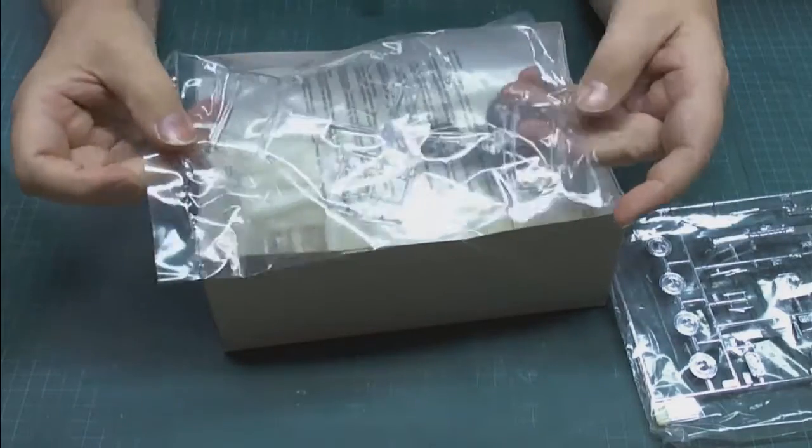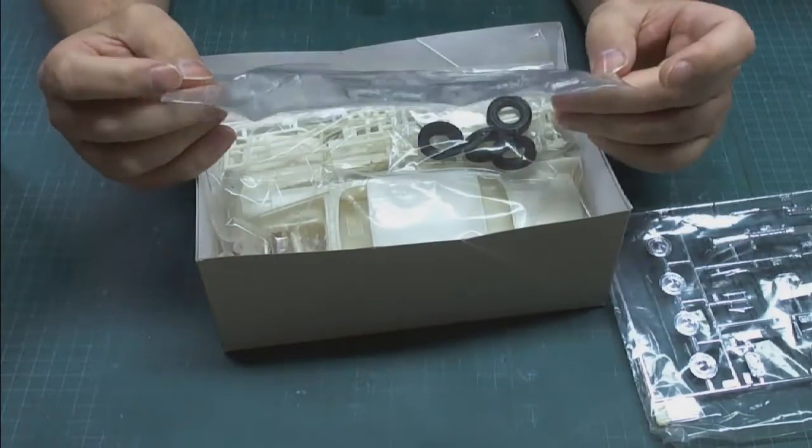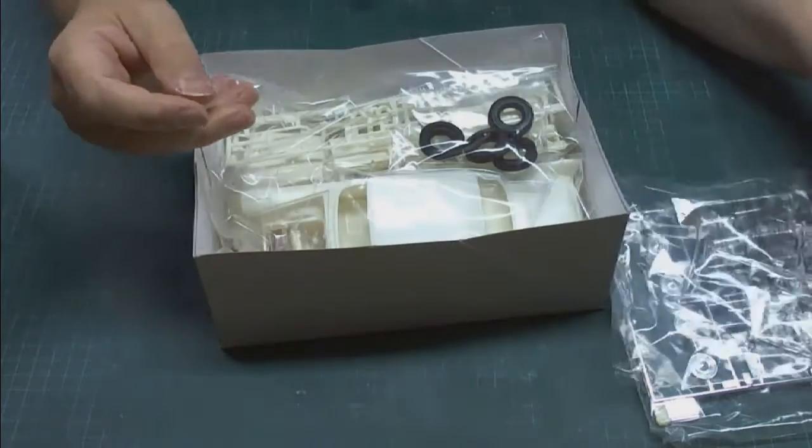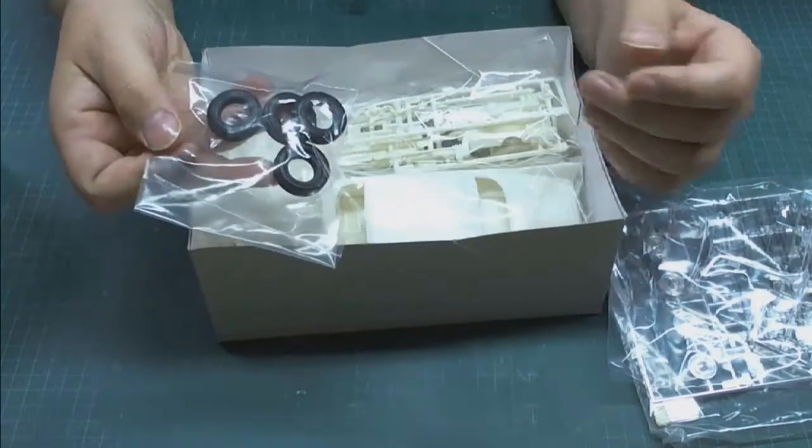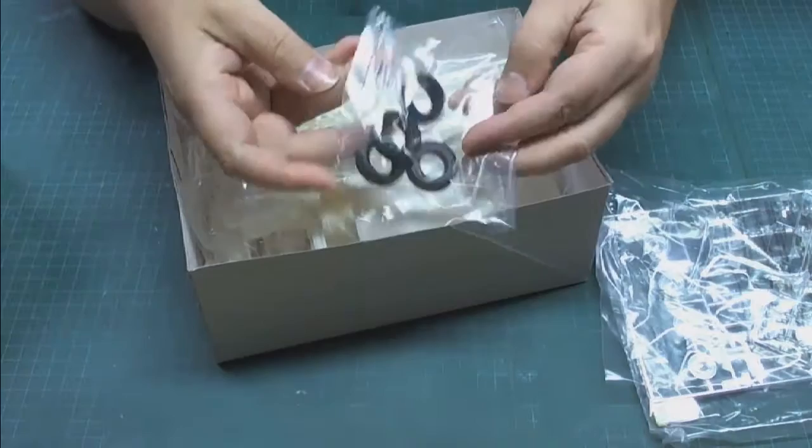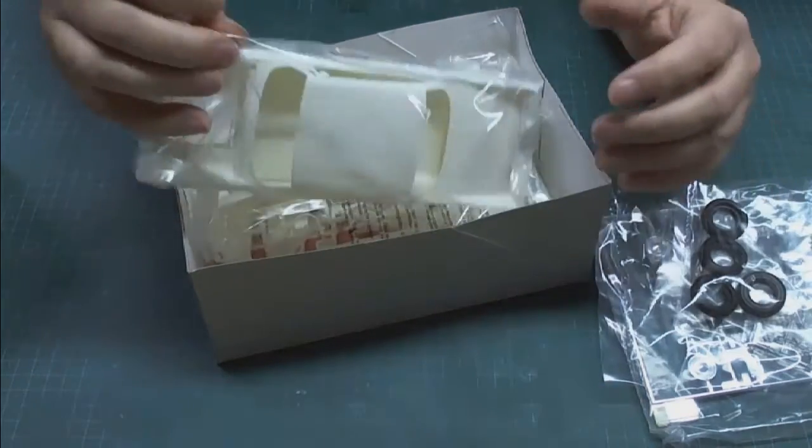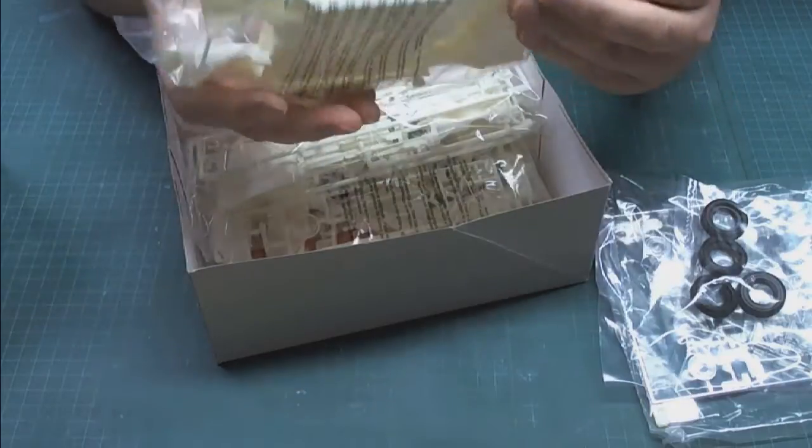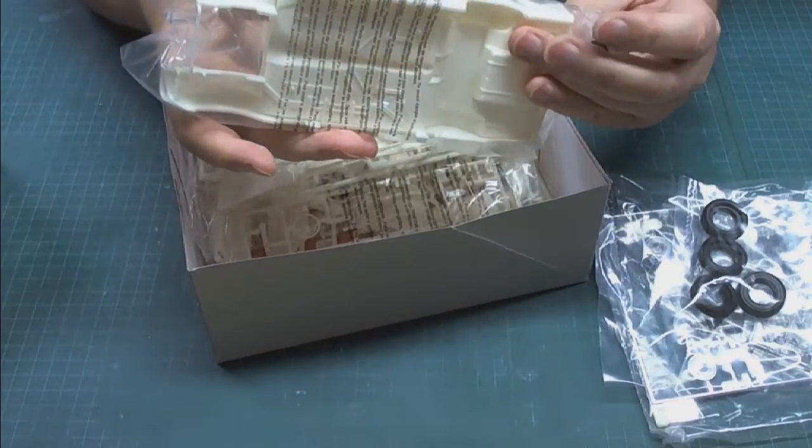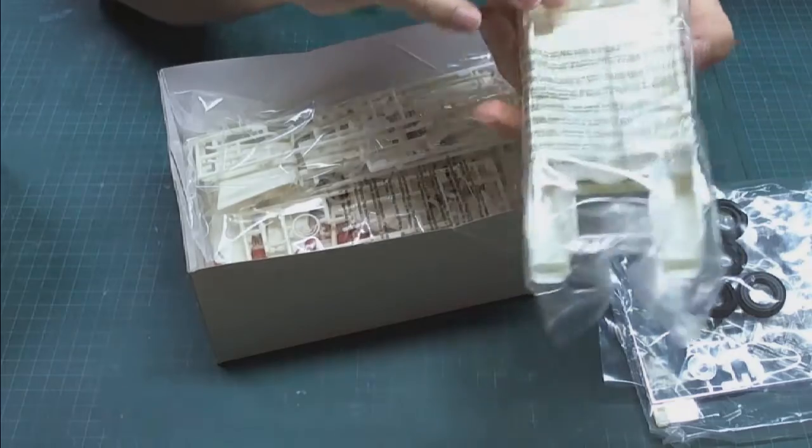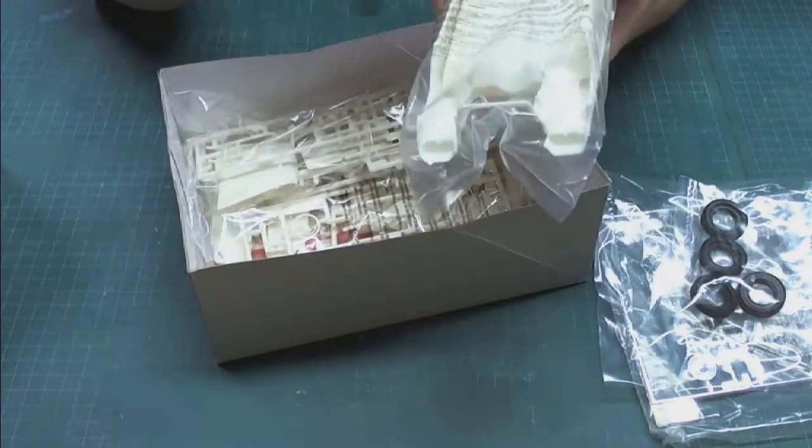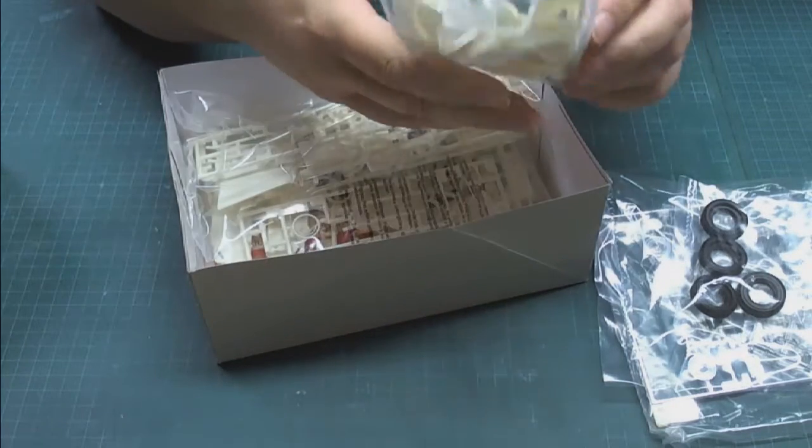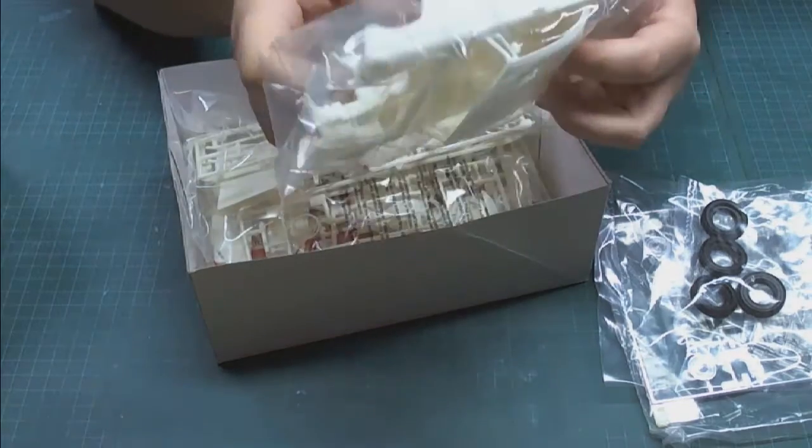Next up we have our clear parts which look pretty standard. Then we have a bag of tires and we've got the body of the car which doesn't look like it has too much flash on it, a little bit. And then of course there's the pan for the interiors there along with the trunk.